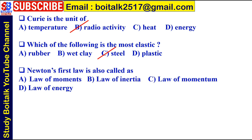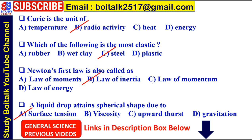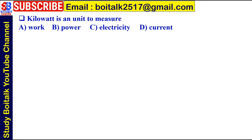Next: Newton's first law is also called — A) law of moments, B) law of inertia, C) law of momentum, or D) law of energy. The answer is B) law of inertia. Next: A liquid drop attains spherical shape due to — A) surface tension, B) viscosity, C) upward thrust, or D) gravitation. The answer is A) surface tension. Next: Kilowatt is a unit to measure — A) work, B) power, C) electricity, or D) current. The answer is B) power.